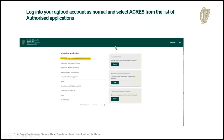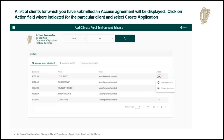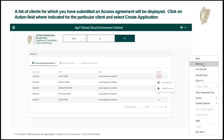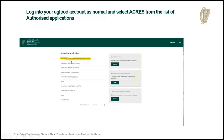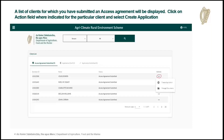Once you have all that done, you can log into your AgFood account as normal and you will see the ACRES application there, highlighted on screen. Clicking on that will show you a list of clients for which you have an access agreement submitted. You click on the actions field, click create application, and that will bring you into the first page of the application form.